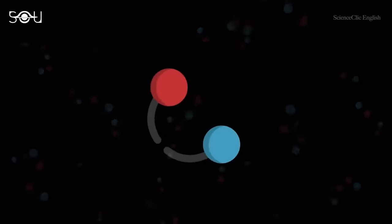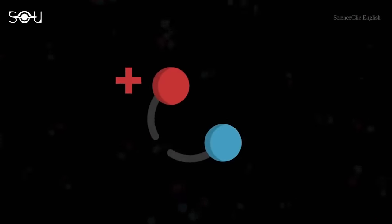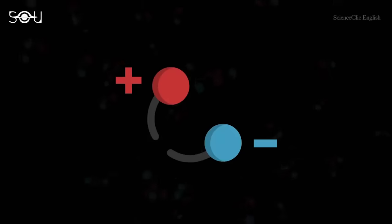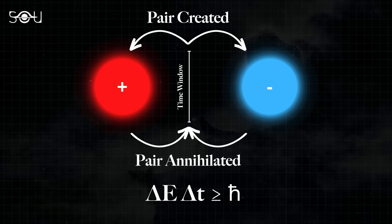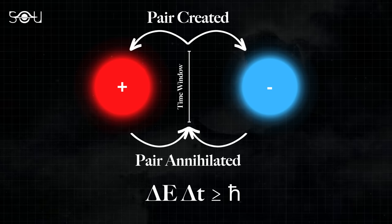When a pair of particles is created, one of the particles has positive energy whereas the other one has negative energy. Although the net energy of the pair is still zero, this can cause a violation of energy conservation.